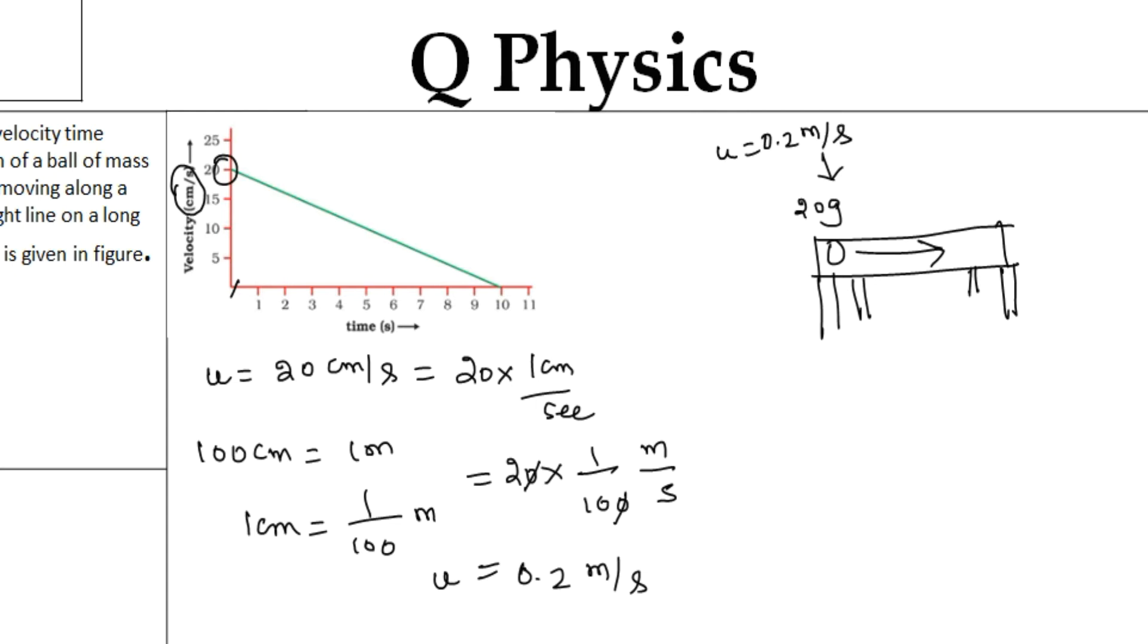If you see the graph, when time increases, the velocity is falling down and the velocity becomes 0 after the time of 10 seconds. It completely stops. So the final velocity after 10 seconds, after t equals 10 seconds, the velocity of the ball will be equal to 0.